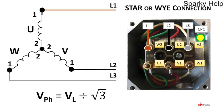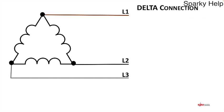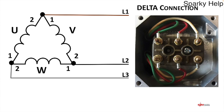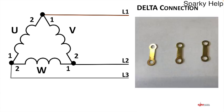The other type of connection is permanently set to delta. Again we have U, V, and W with their numbered ends. For delta, the twos connect to the opposite ones: U2 and V1 connected together, V2 and W1 connected together, and W2 and U1 connected together at each corner. The phases come off those connection points. There is no way to run a neutral to a delta connection — there are only three connections.